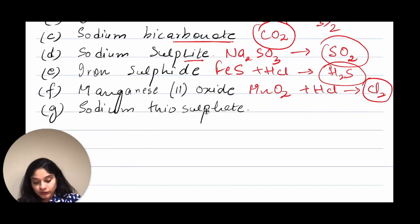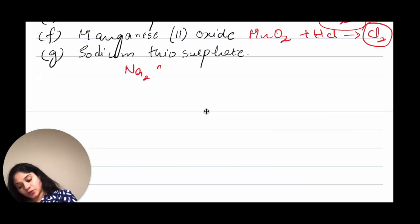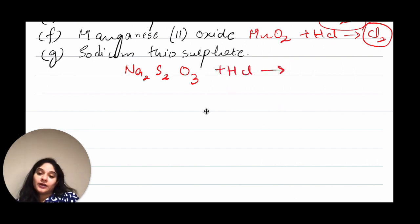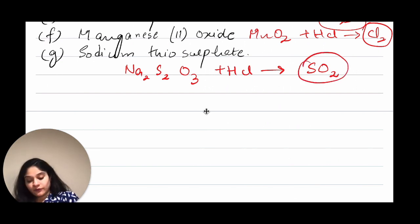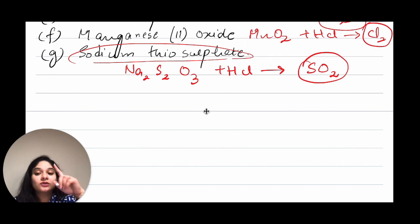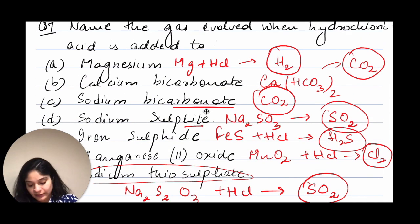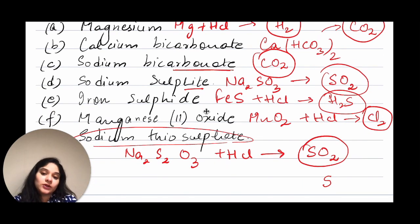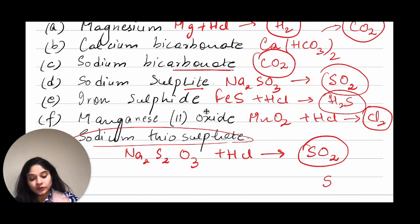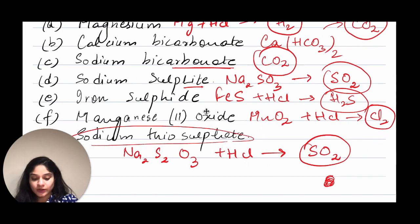Then sodium thiosulfate — Na₂S₂O₃ — reacting with HCl gives SO₂ gas. One important thing about sodium thiosulfate reacting with HCl is that it also gives a precipitate of sulfur. This is one difference between all other sulfide and sulfate reactions with HCl and the sodium thiosulfate reaction — thiosulfates give a particular precipitate of sulfur. So SO₂ is your gas answer, but you can also write that sulfur is produced as a precipitate.